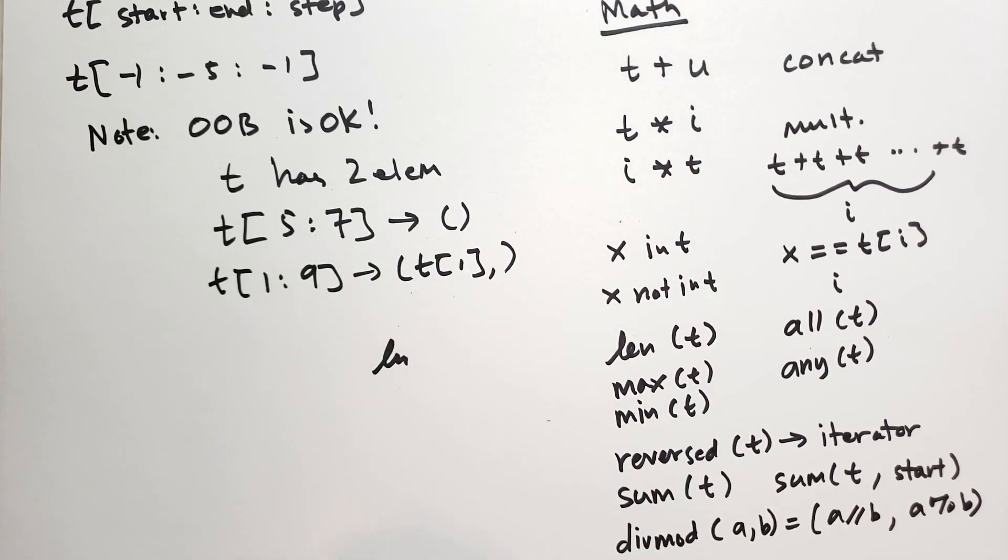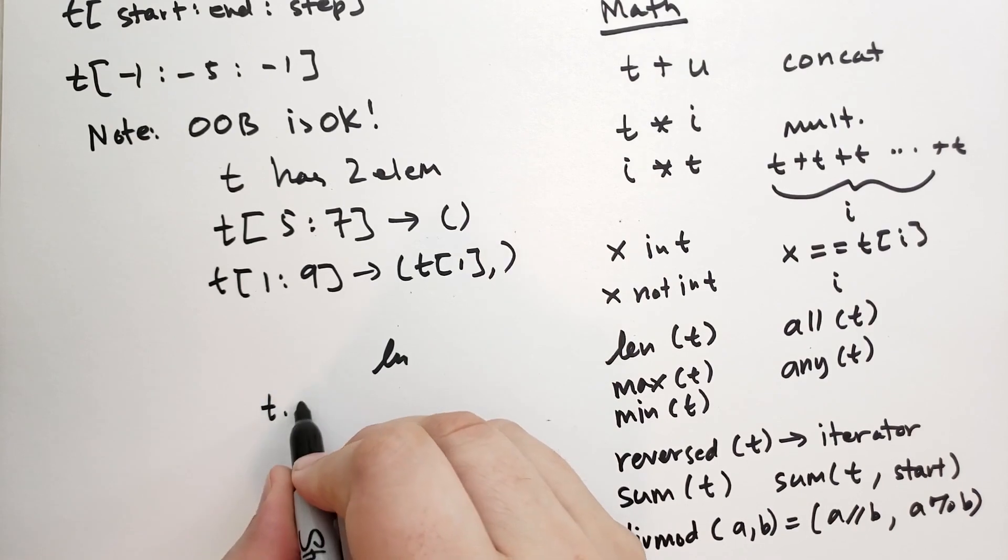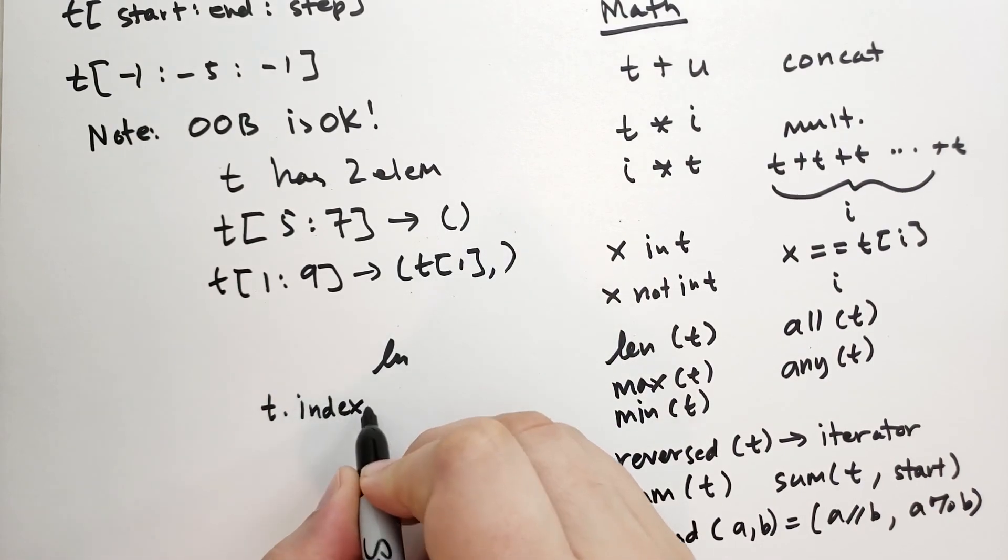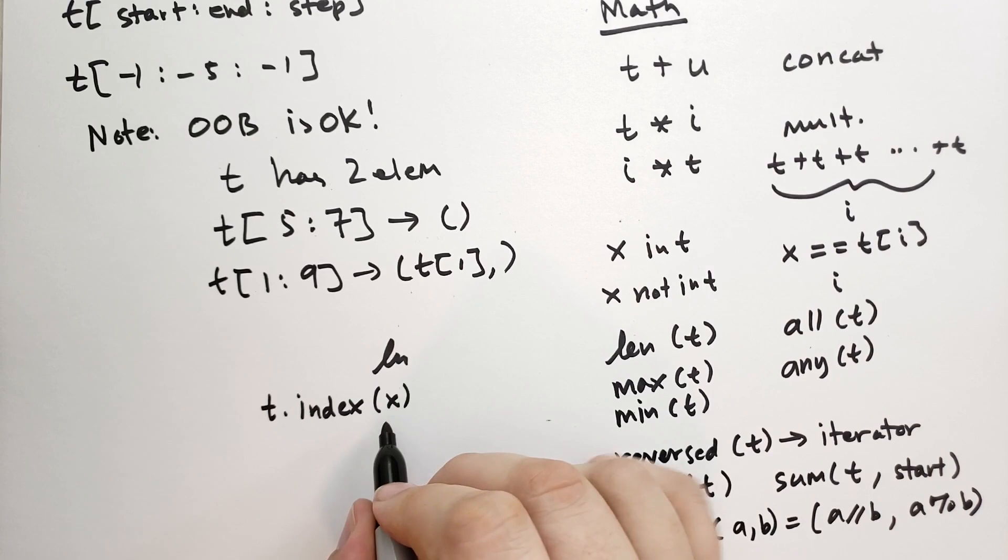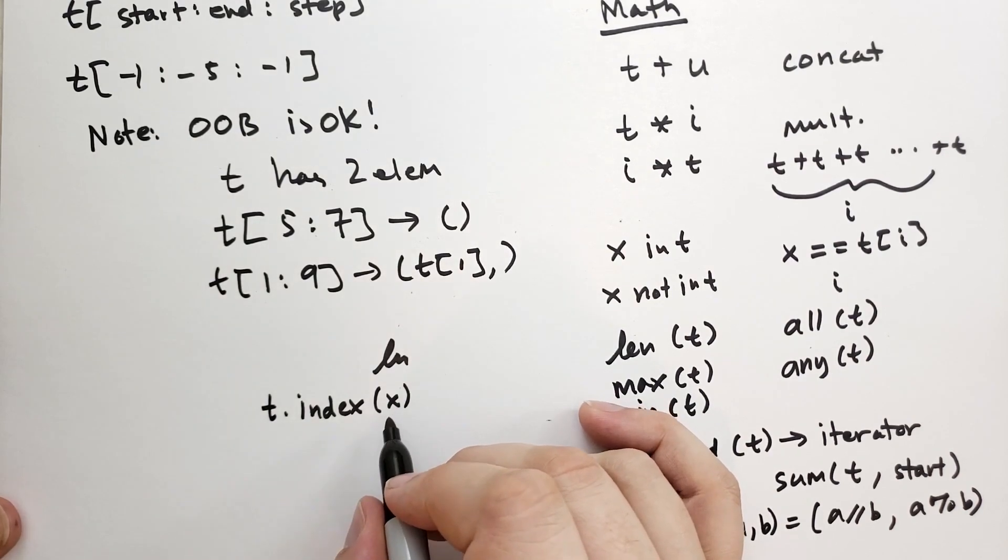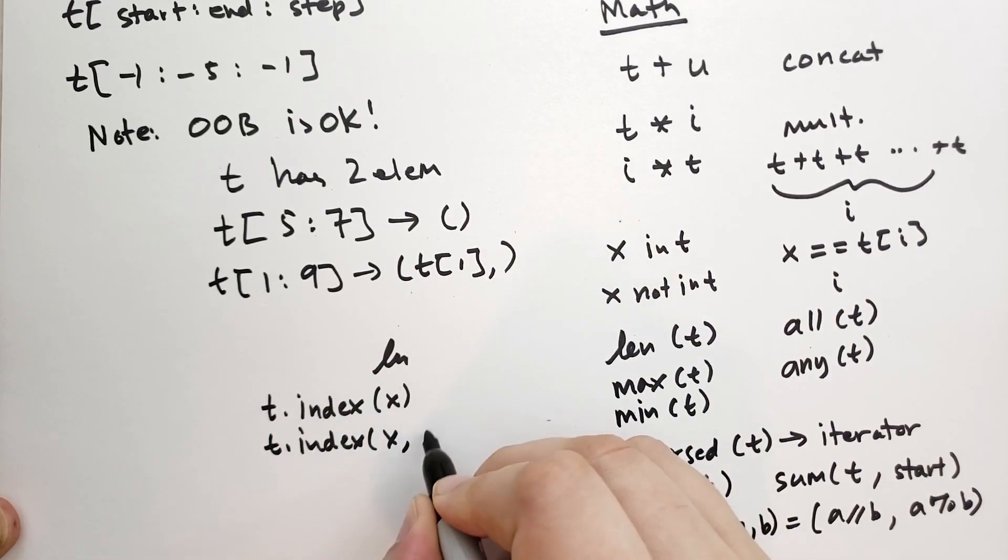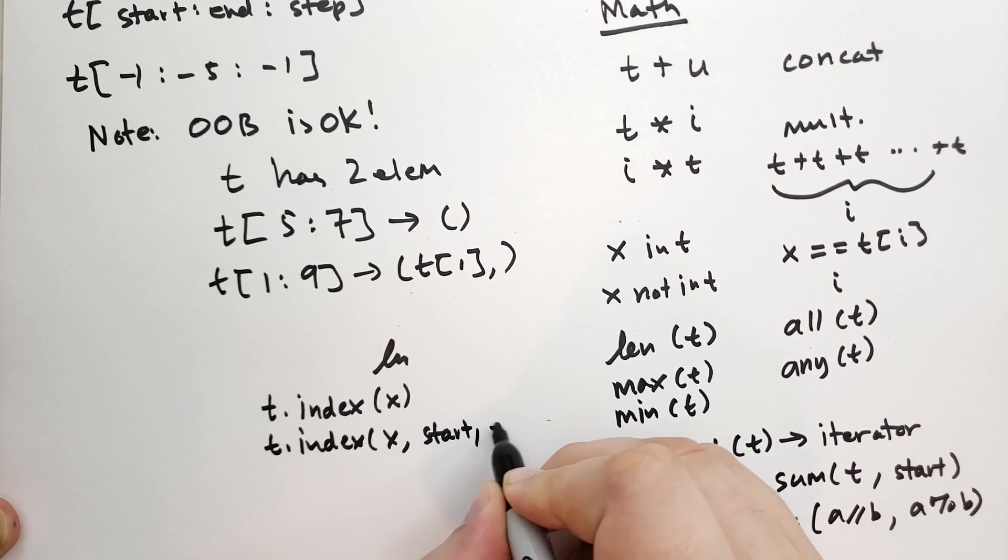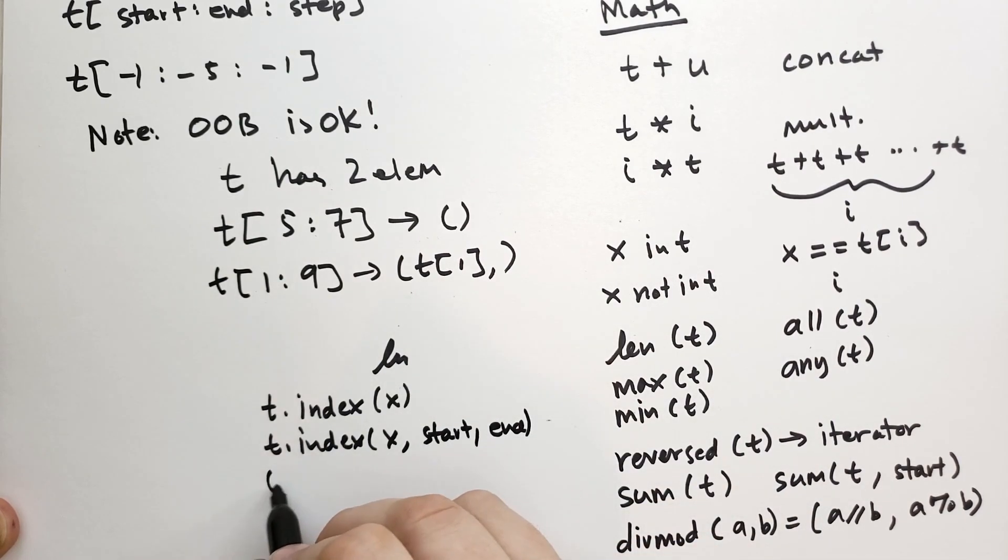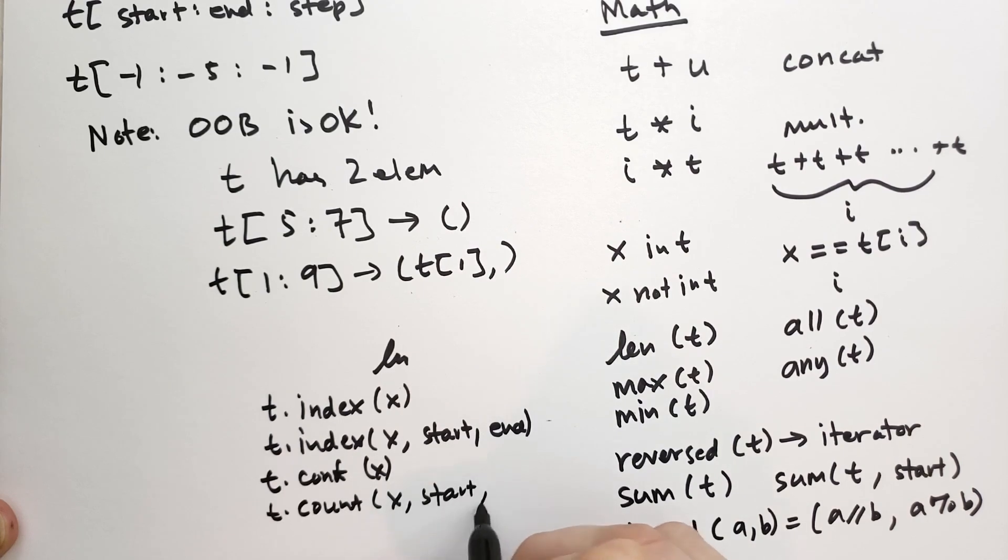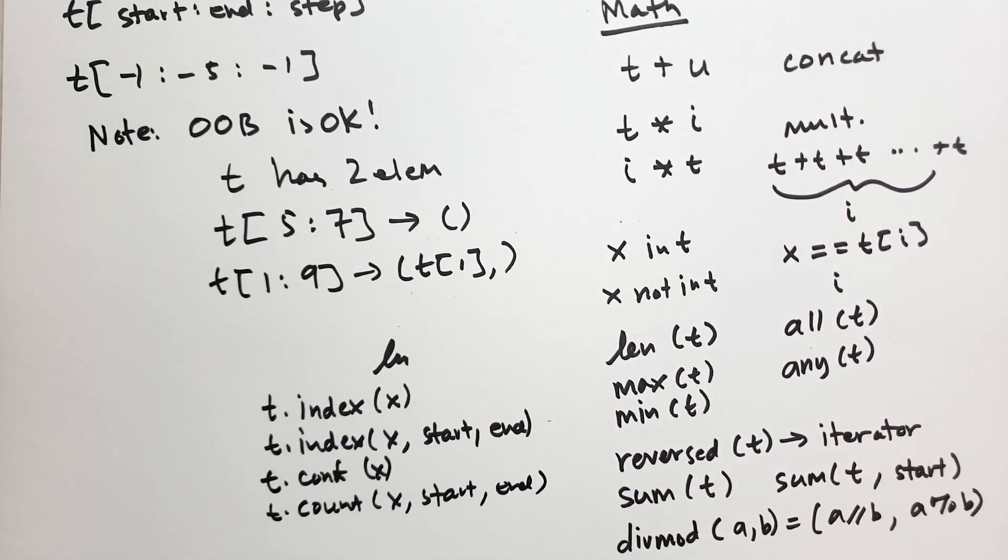There's only a couple methods on tuple. So we have t.index. And so we can specify where is the x. And it will raise a value error if it's missing. We can also do the same kind of thing we did with strings where we have from start to end optionally. And then we also have t.count. And I believe t.count x, start, end is also available.